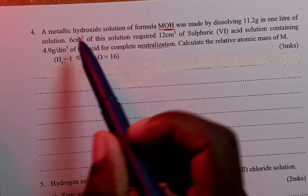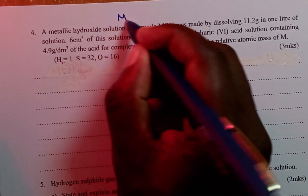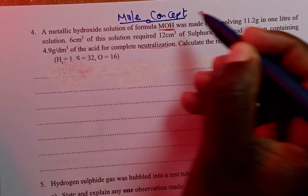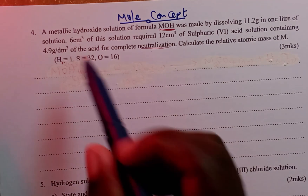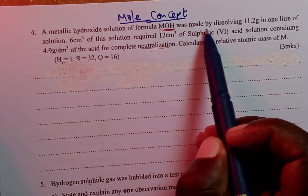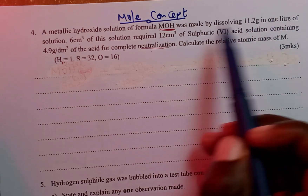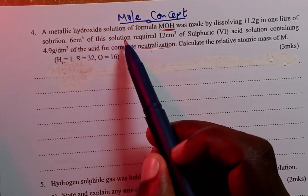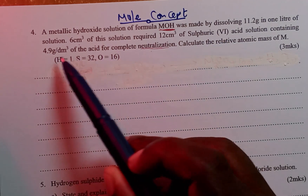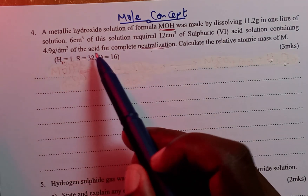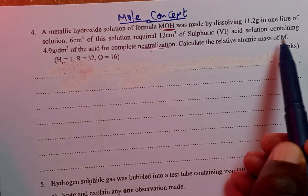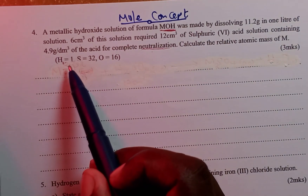Welcome. We are presenting a question on mole concept from Best Western Schools Chemistry Paper One. A metallic hydroxide solution of the formula MOH was made by dissolving 11.2 grams in one liter of solution. 6 cm³ of this solution required 12 cm³ of sulfuric acid solution containing 4.9 grams per dm³ of the acid for complete neutralization. Calculate the relative atomic mass of M.